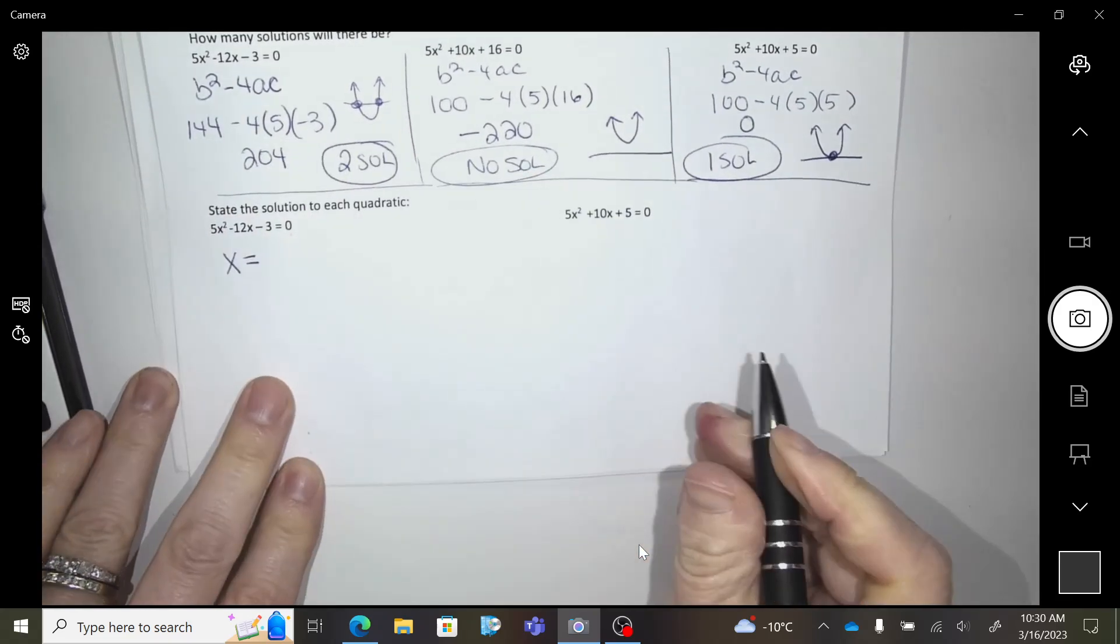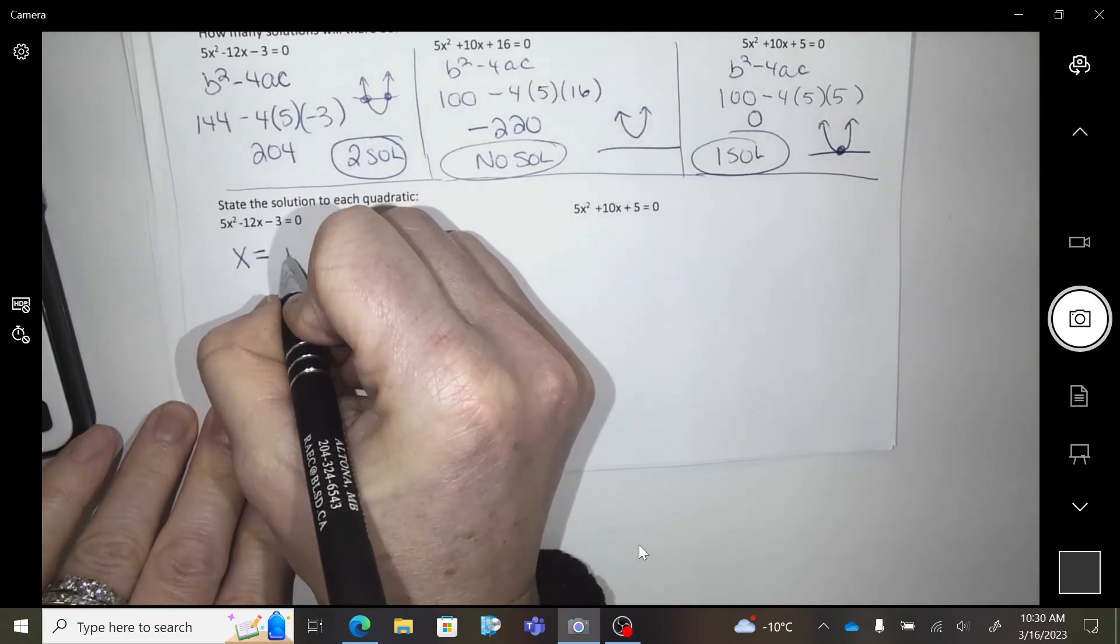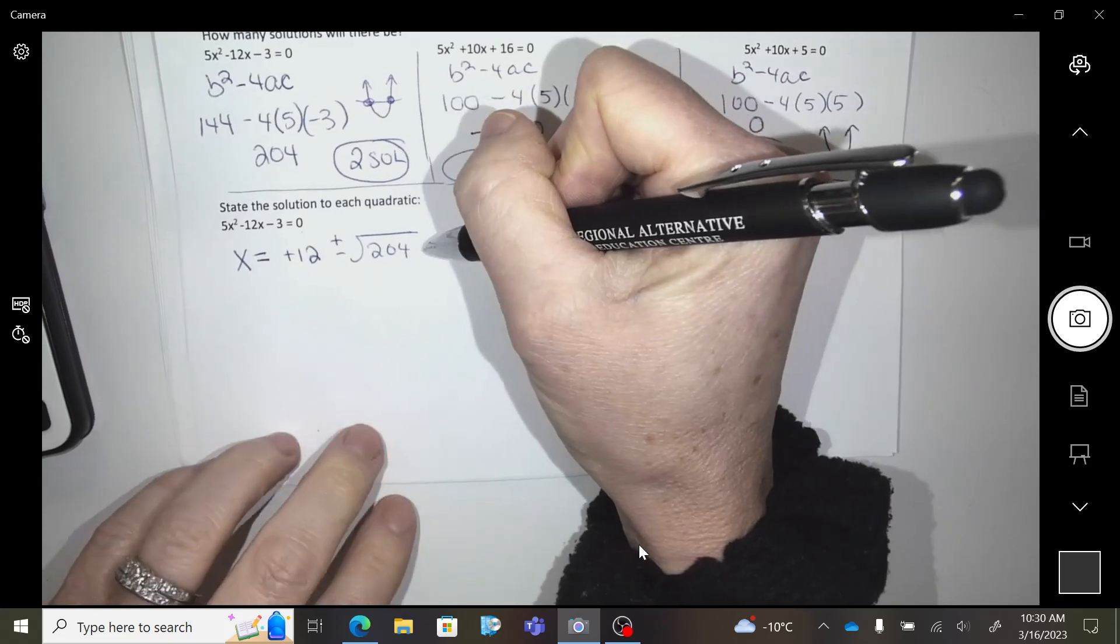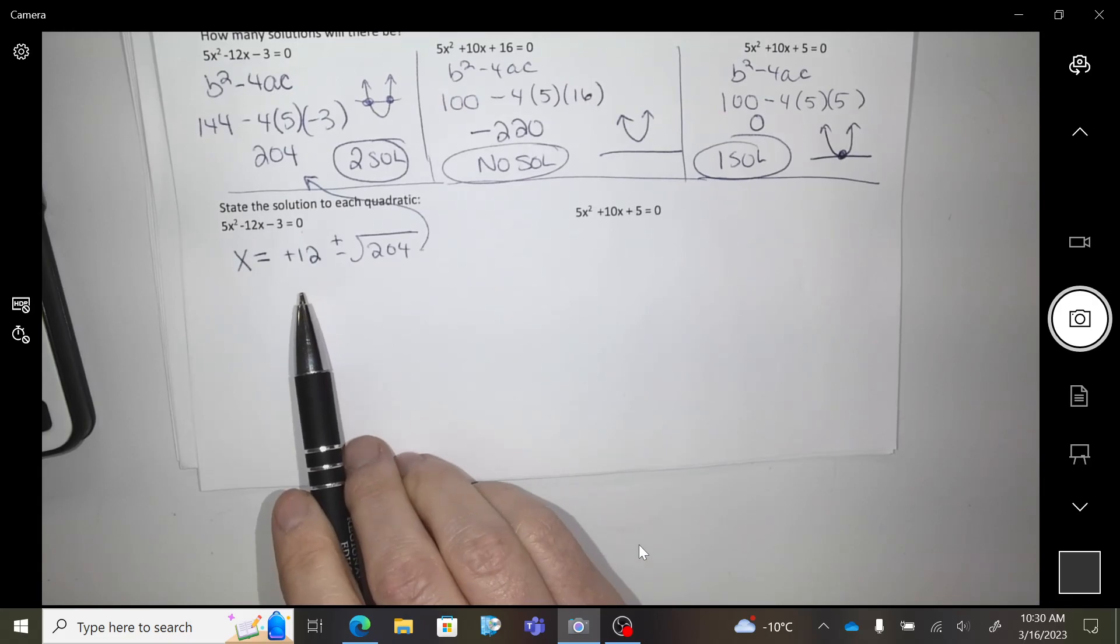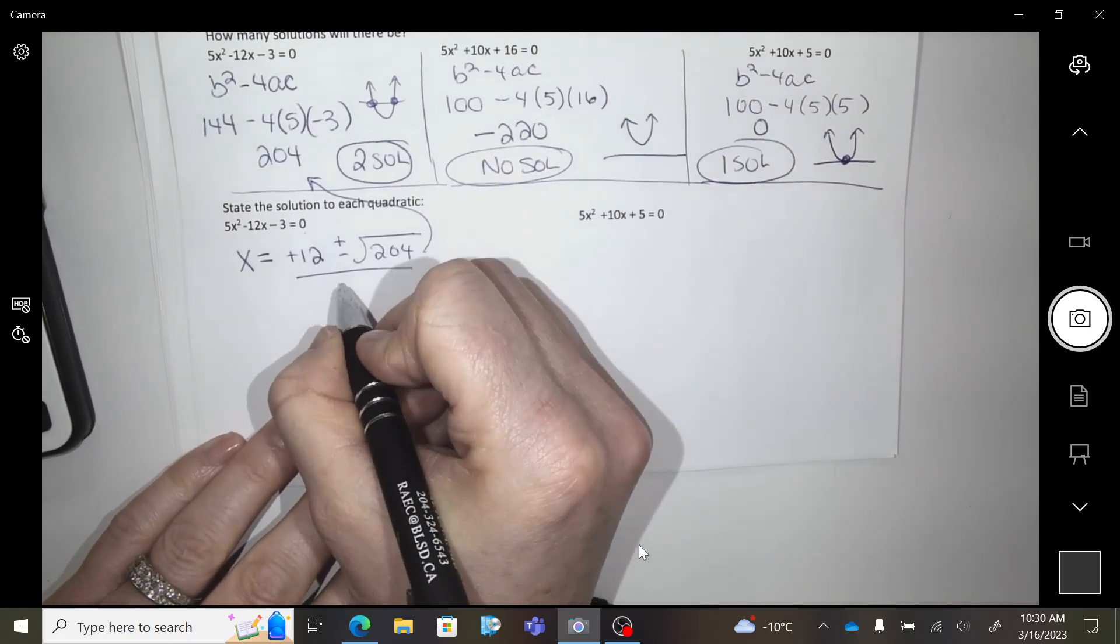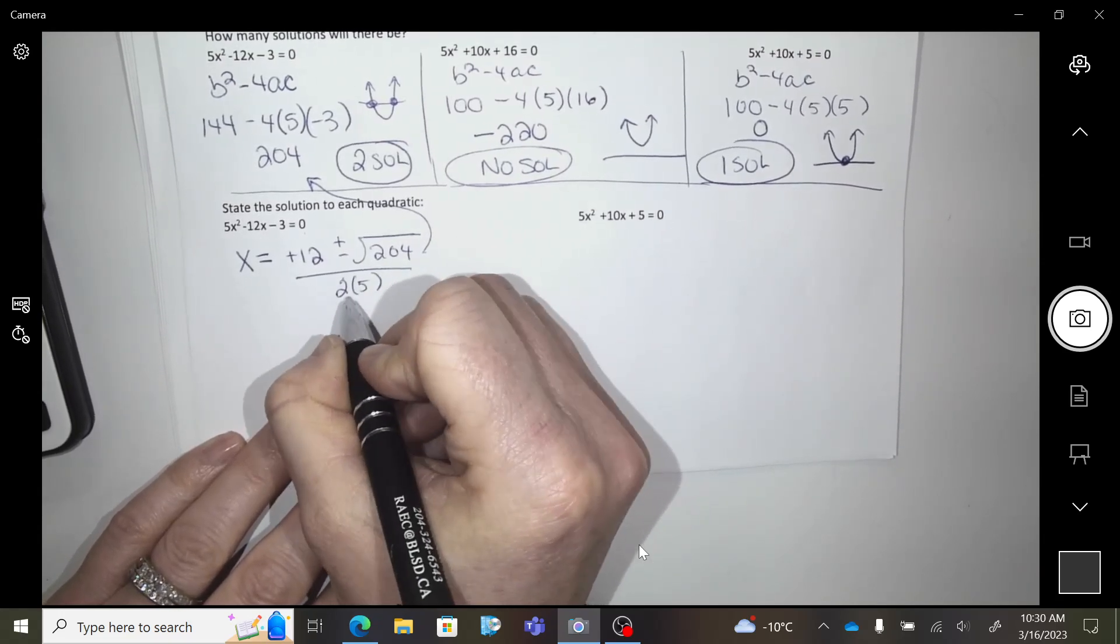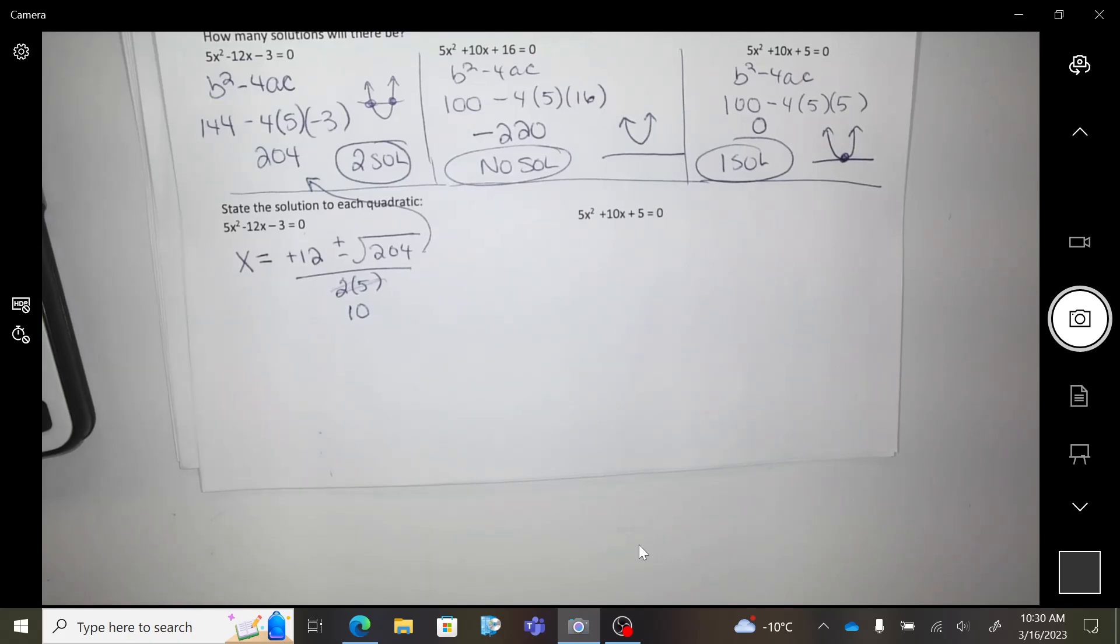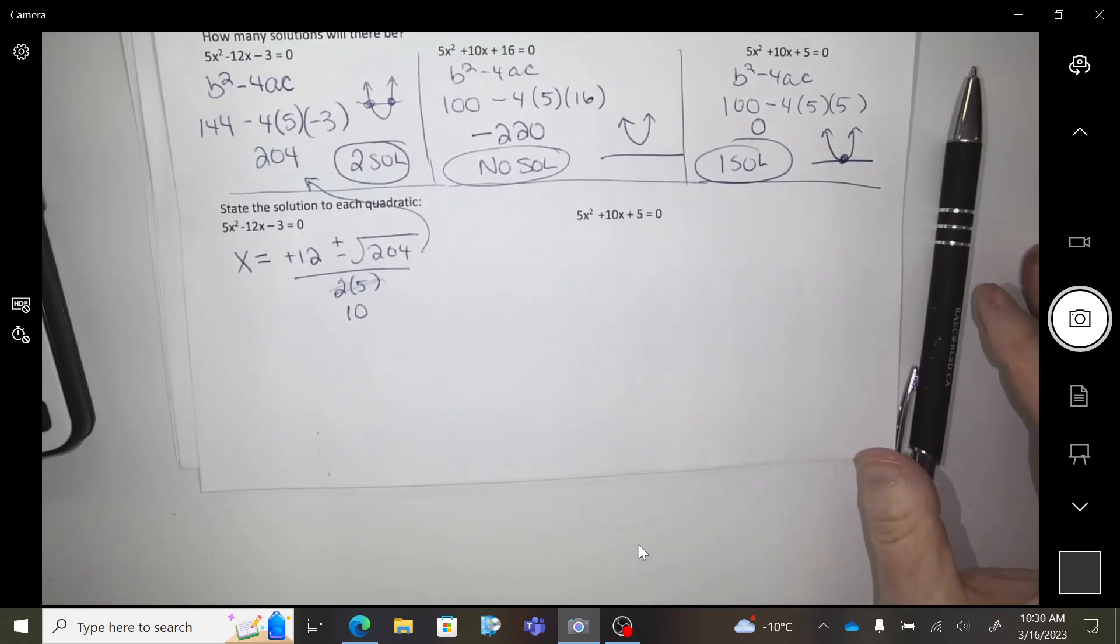So here we go. X equals opposite b, so positive 12 plus or minus the square root of 204, because we already did this up here. We already did the work up there. So 12 plus or minus the square root of 204. We already did that work. Over 2 times 5. In other words, that would be a 10, right? On the bottom. Okay, type it in your calculator. Give me two answers. This time I didn't put them on the bottom for you to check. Let's see if you can get them.